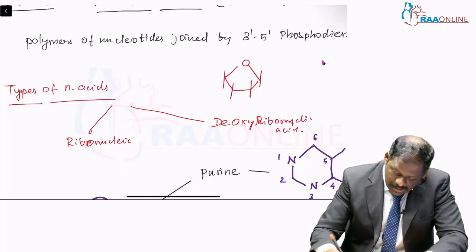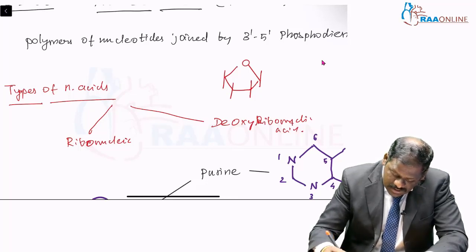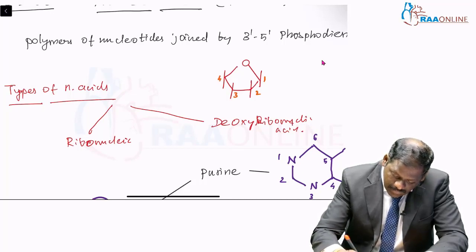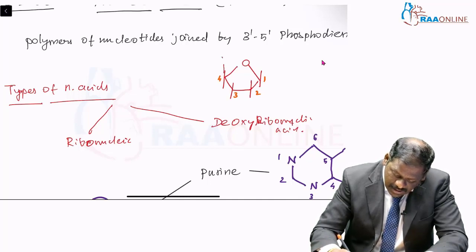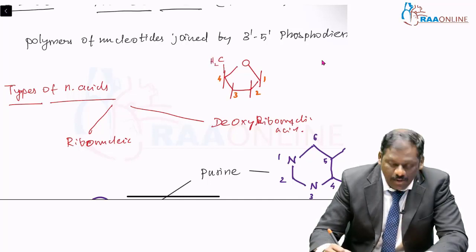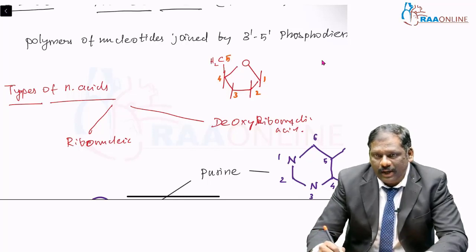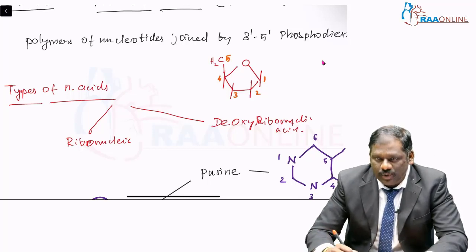In this, this will be your first carbon. This should be your second carbon. This is your third carbon. This is your fourth carbon. And the fifth carbon will be seen here, CH2. This is your fifth carbon. So it is a ribosugar.